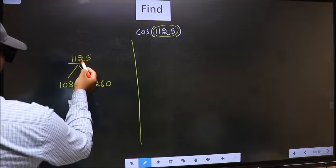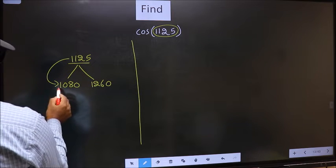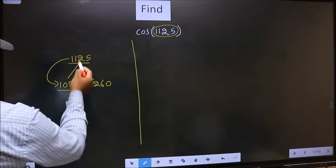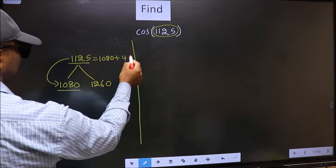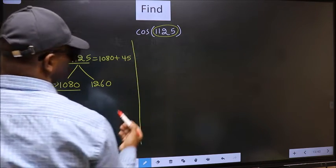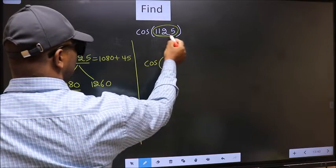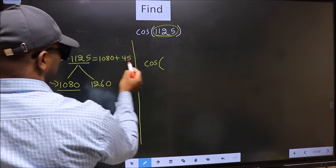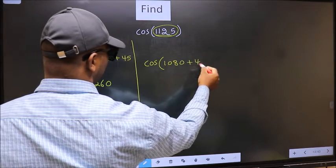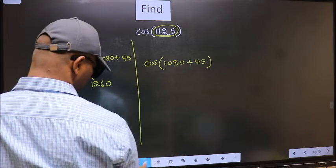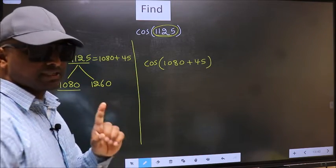Next, this number is close to 1080. So we should write 1080 plus 45. This will become cos(1080 + 45). This is your step 1.